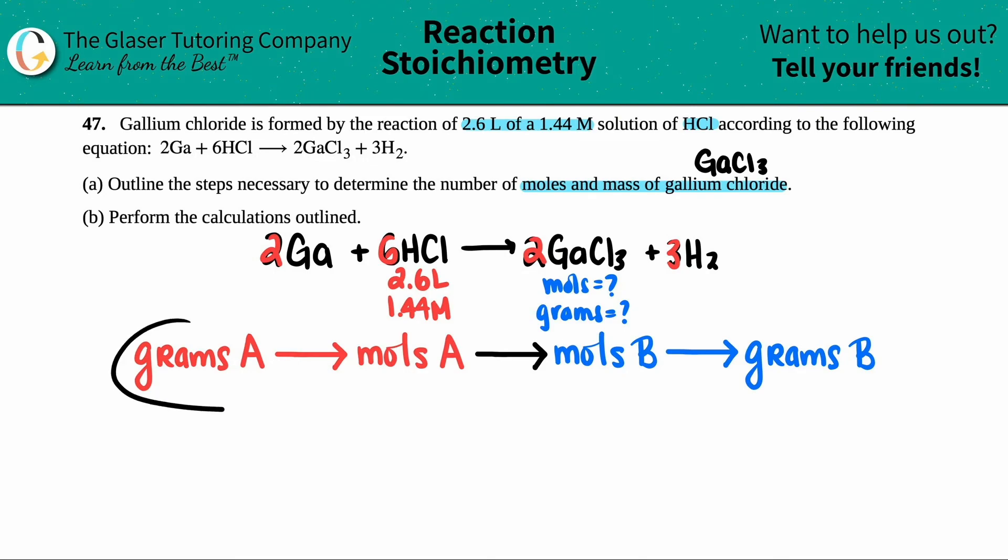Now I color coded this. The A's or the reds are the information for the compound that you already have. And the blues, AKA the B's, those are what you're trying to solve for. And that's why I secretly put this in red and this in blue. You see how they gave us information for HCl. That's the red side. We're looking for gallium chloride. So that's going to be the blue side. But now let's see, do I have grams of HCl? No. Do I have moles of HCl? No. Well, from this information, which one can I find out? Oh, I can find the moles of HCl, right?